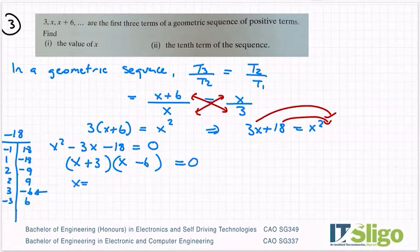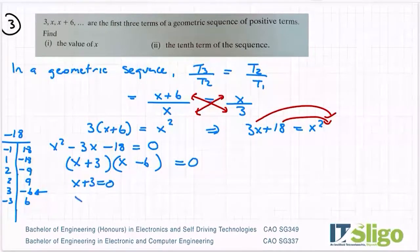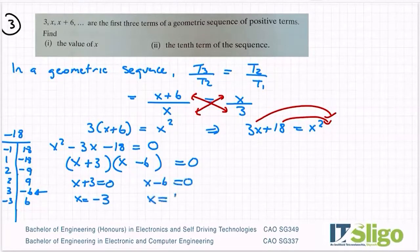And then solve. So to solve, you split the factors, and that equals zero. So x plus 3 equals zero, x equals minus 3. x minus 6 equals zero, x equals 6. So there are two possible answers for x that meet this type of sequence.